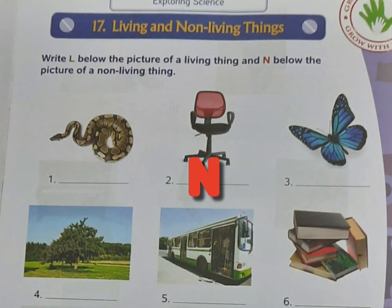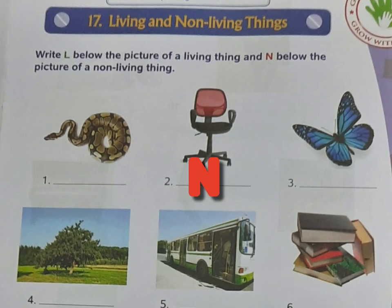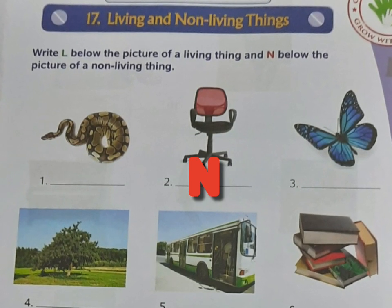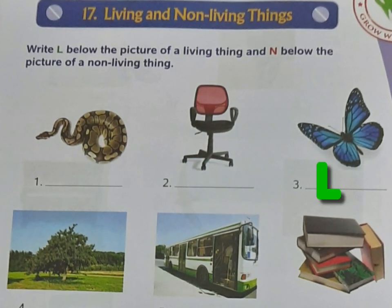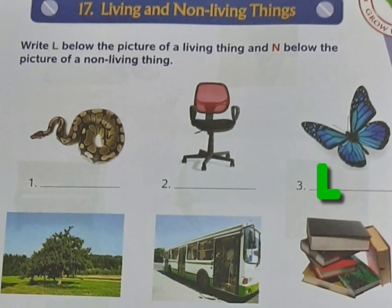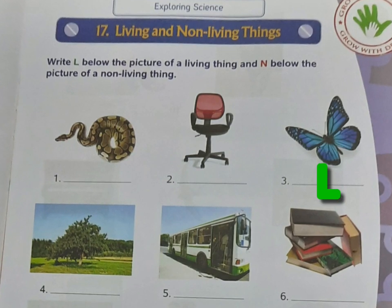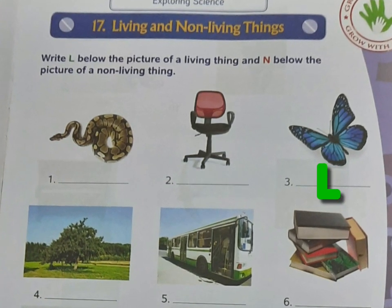Chair — a chair is a non-living thing. Butterfly — it can fly, breathe, grow, and move, so it is a living thing.